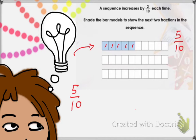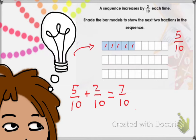So I'm going to add 2 tenths every time because the sequence has to increase by 2 tenths. Adding the numerator: 5 plus 2 equals 7, and our denominator stays 10. So our next fraction is going to be 7 over 10. Now let's shade our next bar model to show 7 over 10.